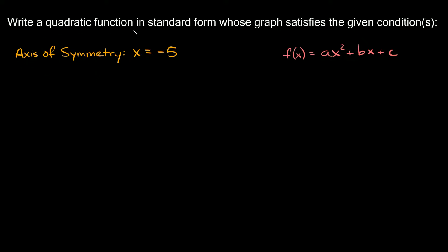So here it says write a quadratic function in standard form whose graph satisfies the given conditions, and it tells us that the axis of symmetry is at x equals negative 5. And in case you don't remember what standard form is, it's f of x equals ax squared plus bx plus c. This is what we want our answer to look like.